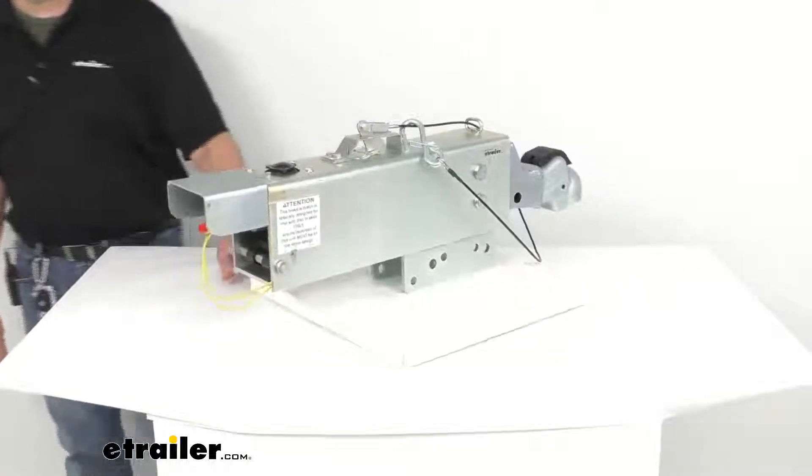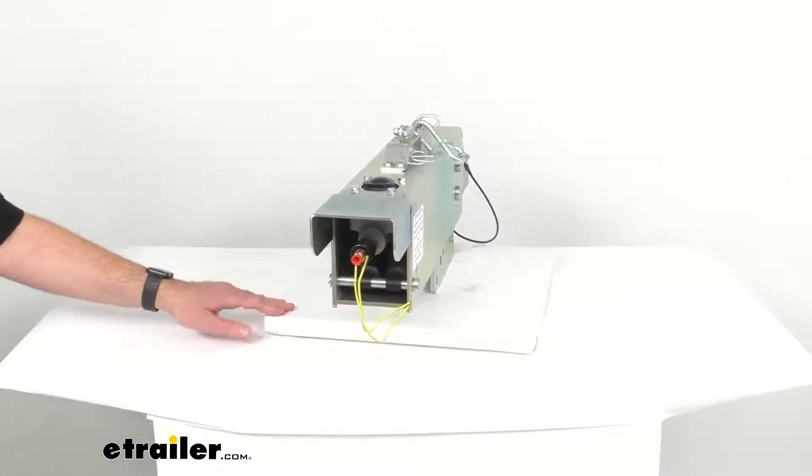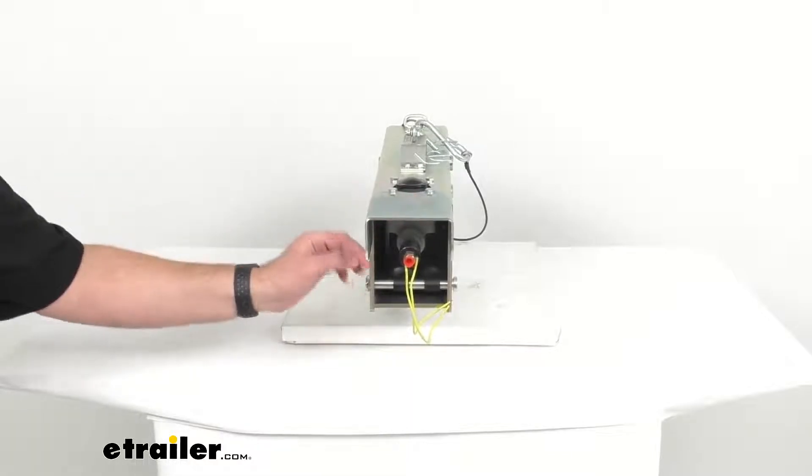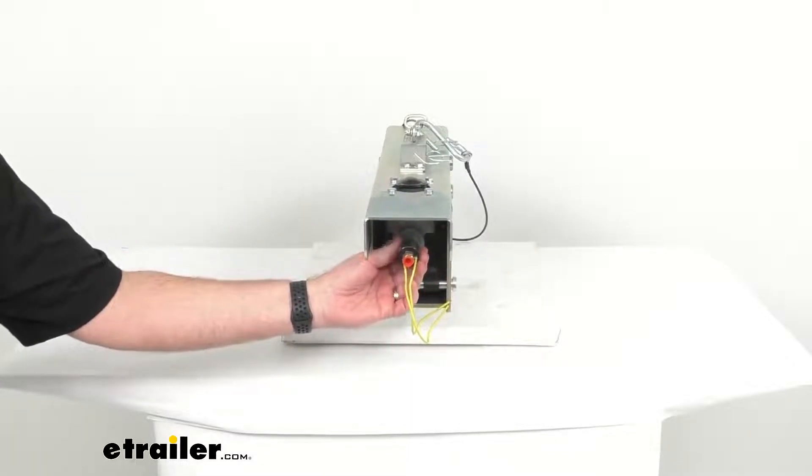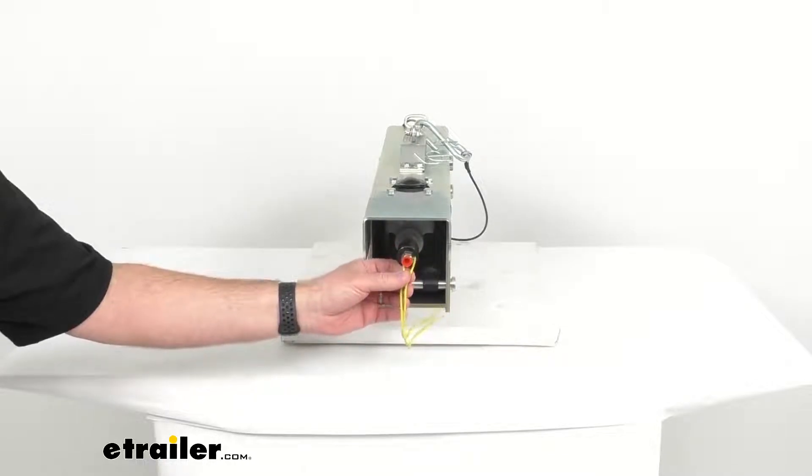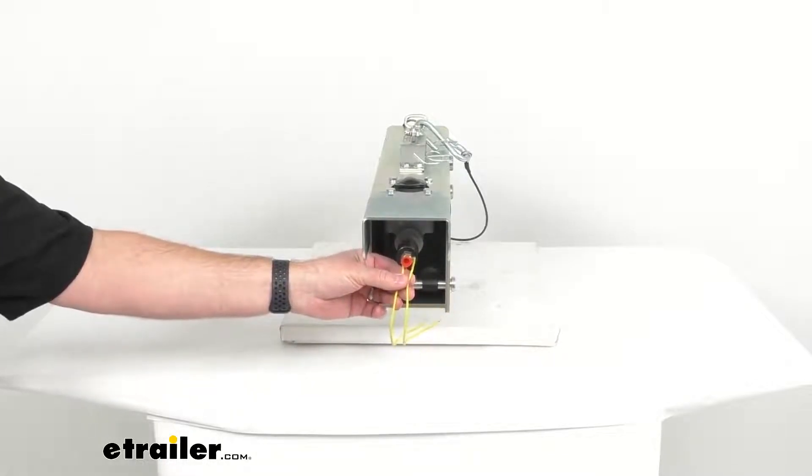At the rear there is an electric reverse lockout solenoid which will let you back up without actuating your trailer brakes. It is installed into the master cylinder and this electric solenoid will activate automatically when you shift into reverse.